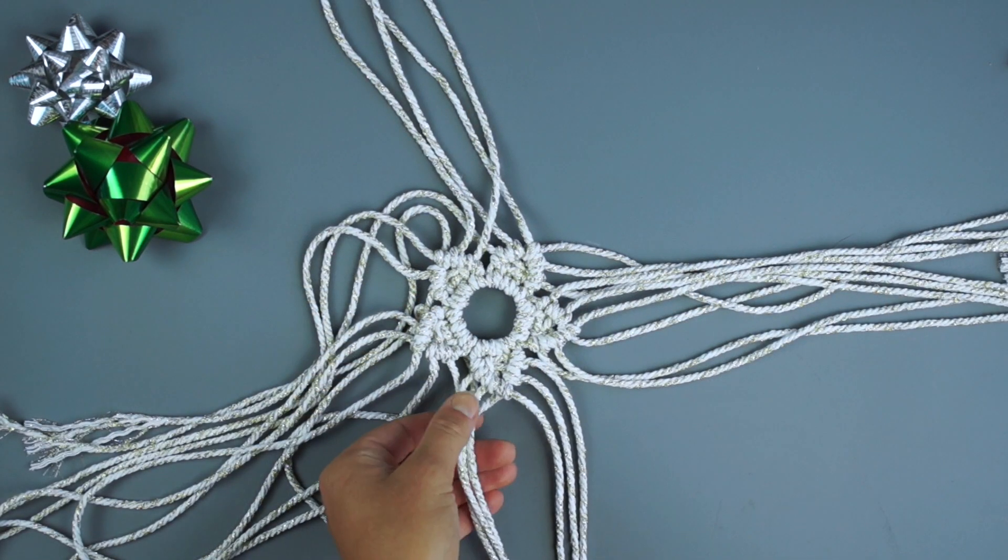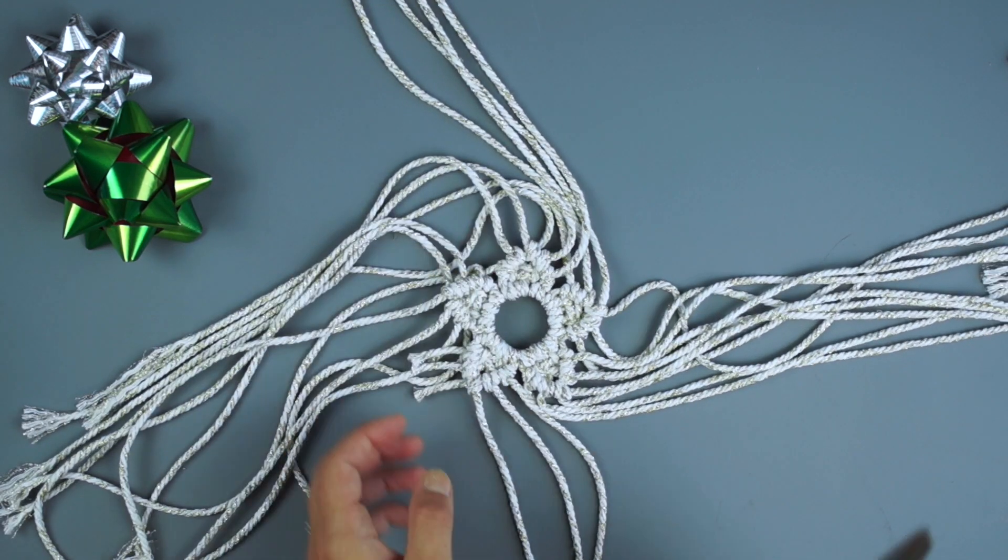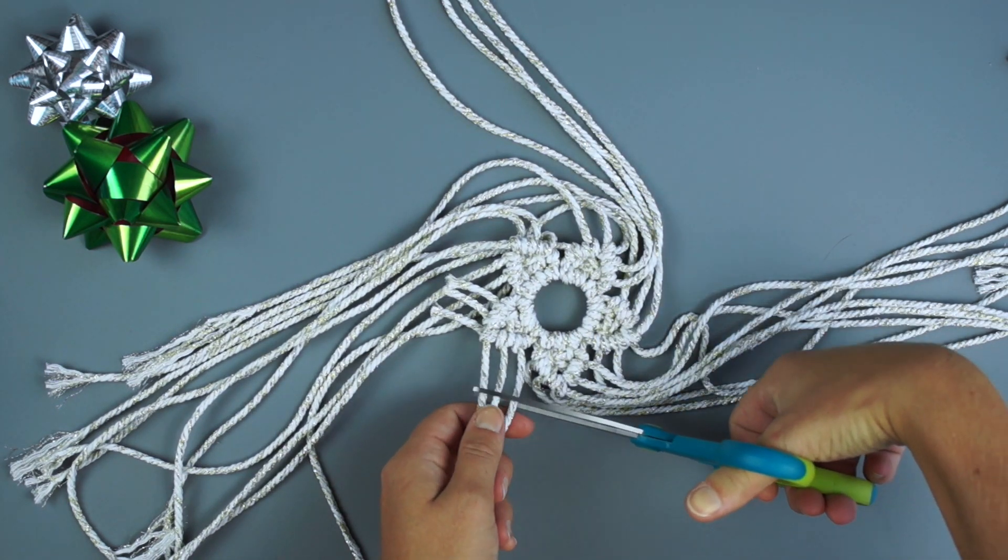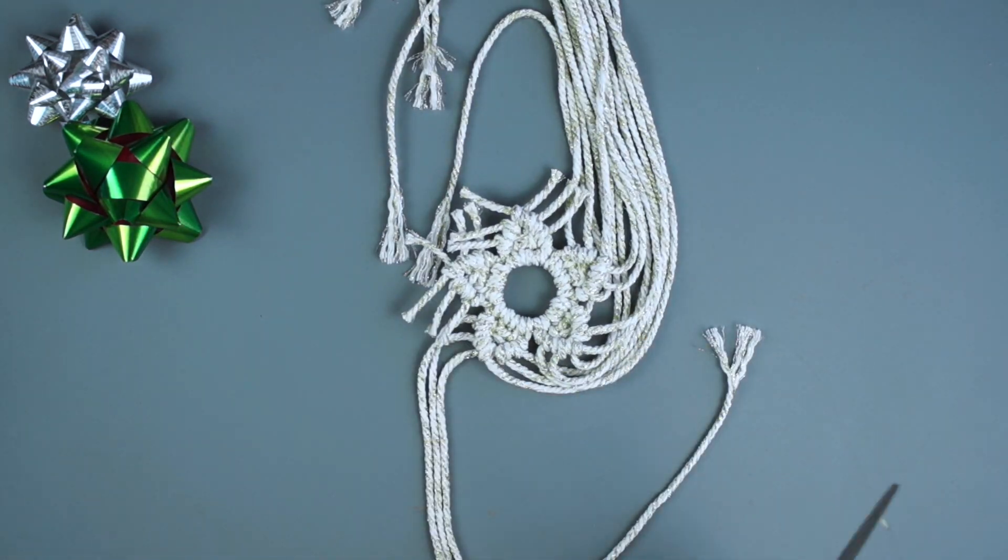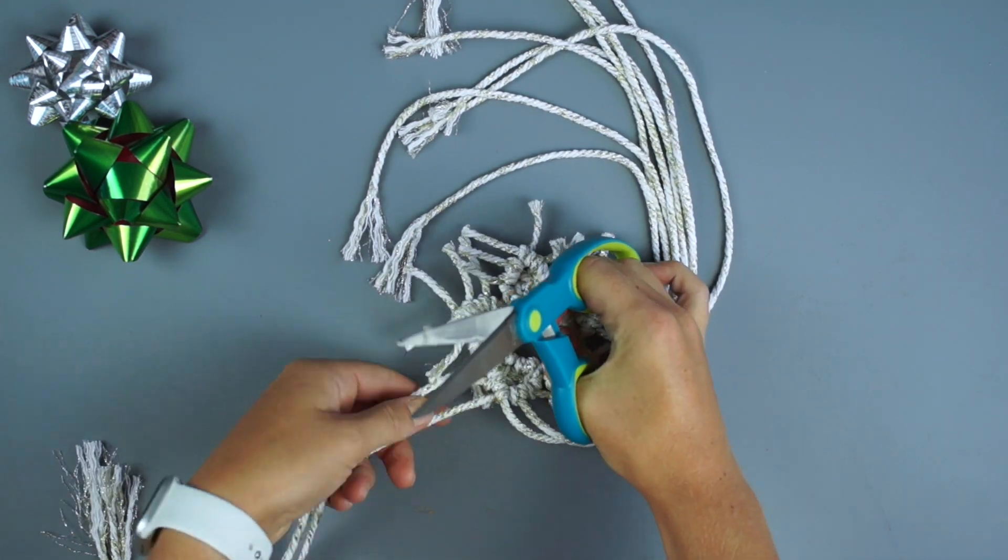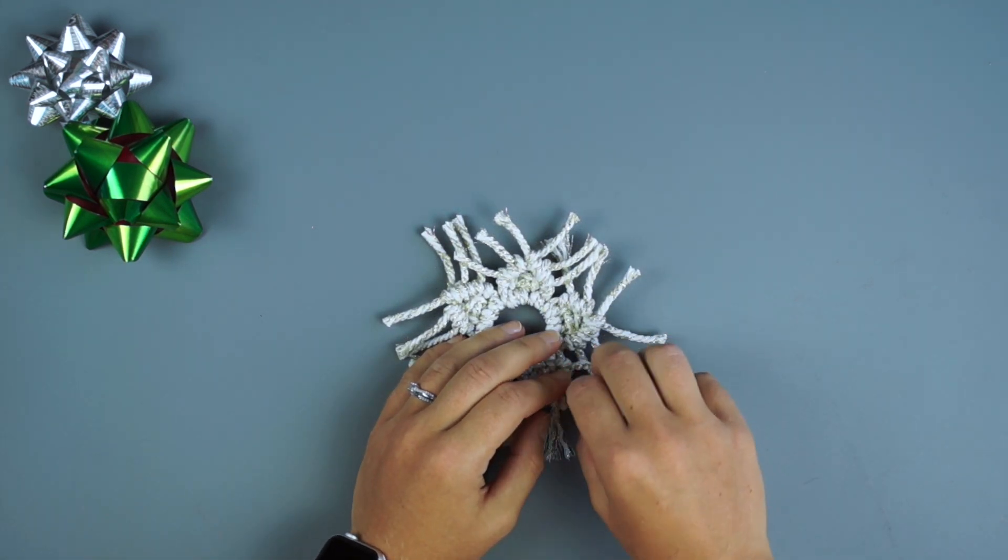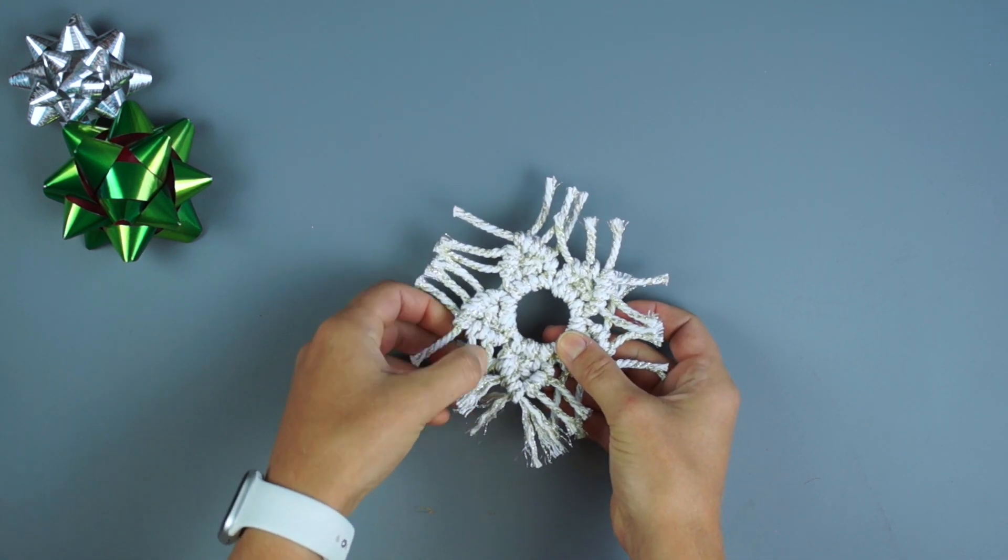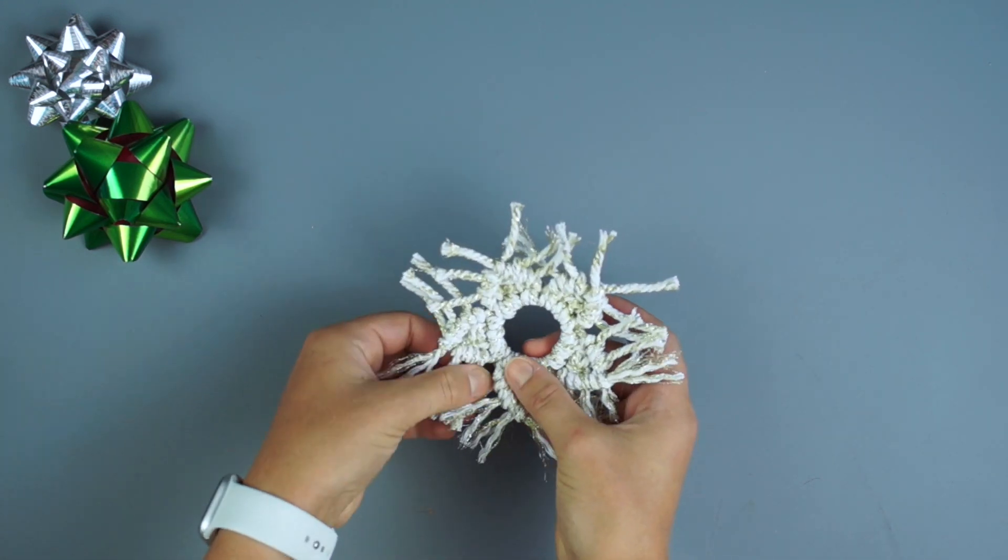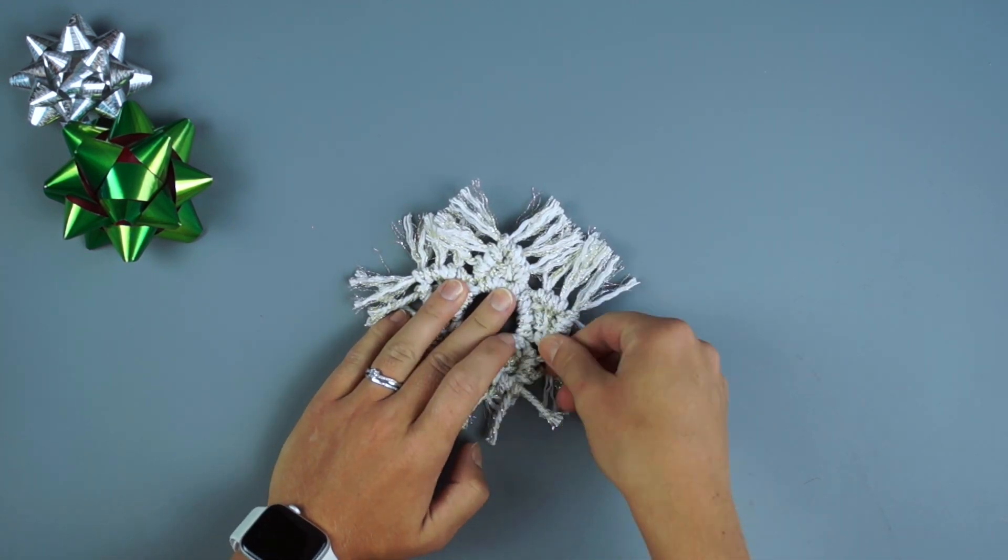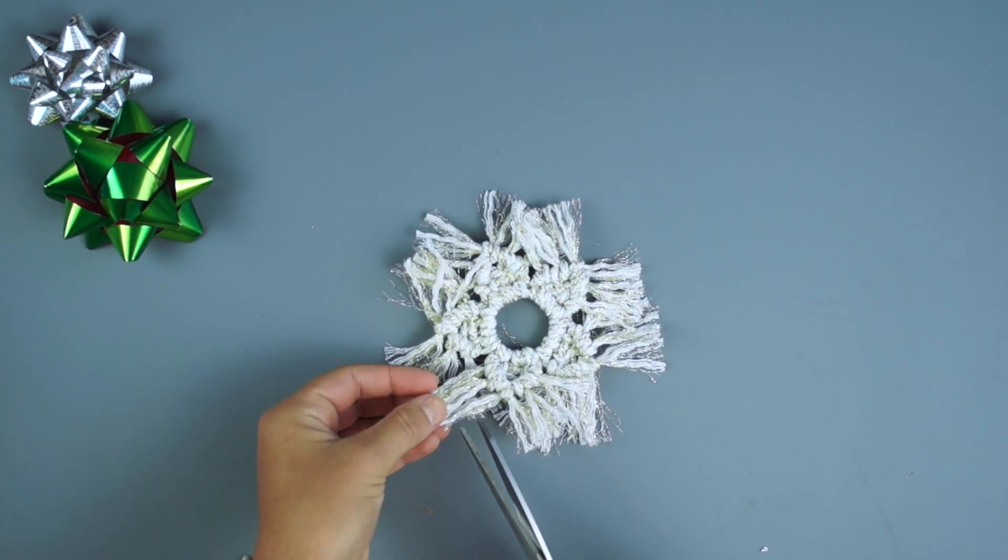Trim the ends so that they are about 1 inch long. Untwist the ends to create fringe. Trim the ends one more time to create a clean cut.